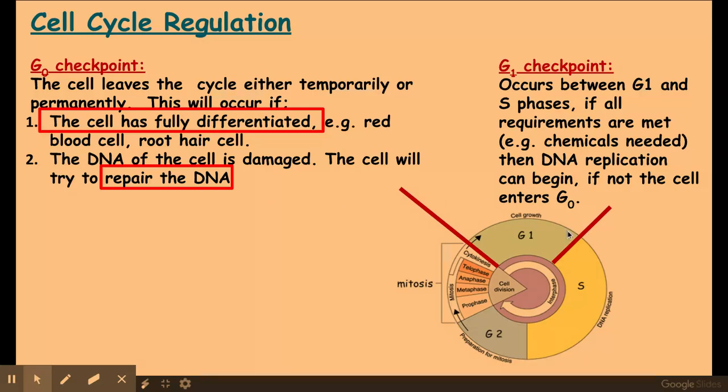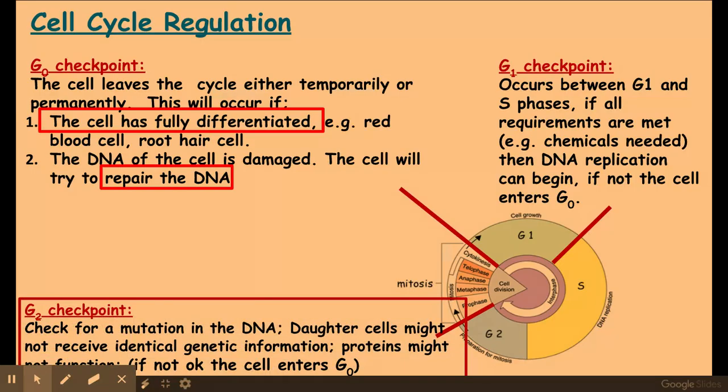We have a G1 checkpoint and this occurs between the G1 and S phase. And this is to make sure that everything and all the chemicals are needed for DNA replication. If not, then the cell will enter G0 where it will try and rectify those issues.